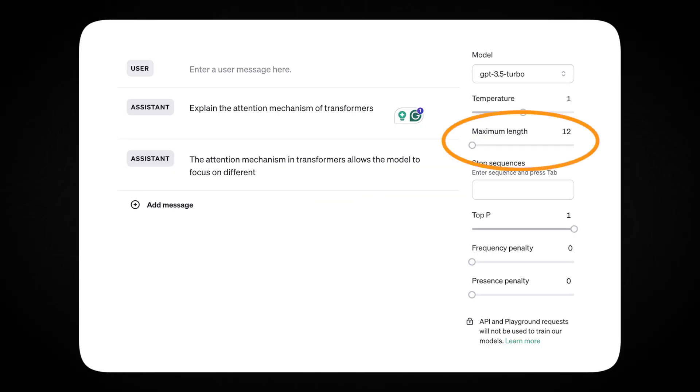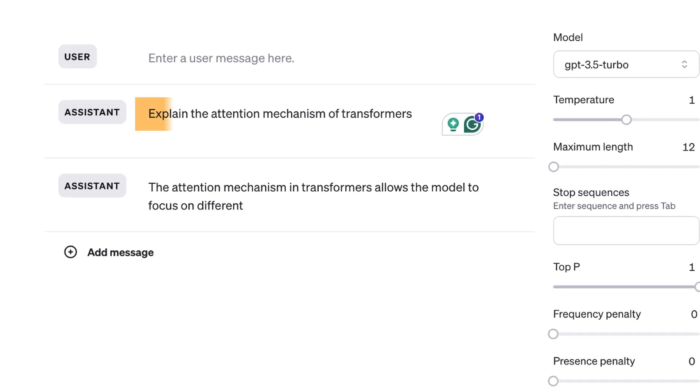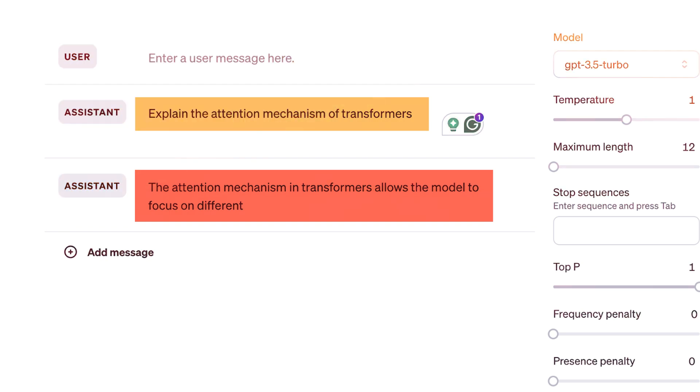However, if the question is too broad or complex relative to the token limit, the model might end up providing an answer that feels incomplete, like this one. As we see, it's not always perfect, but it keeps on improving.